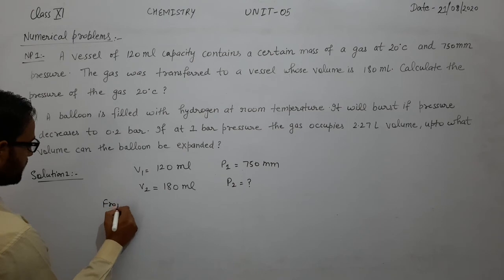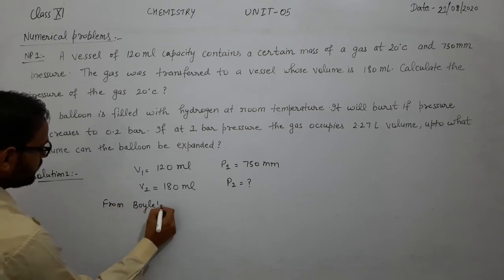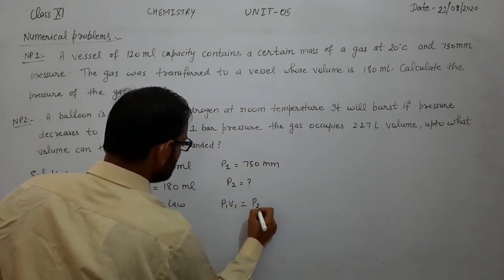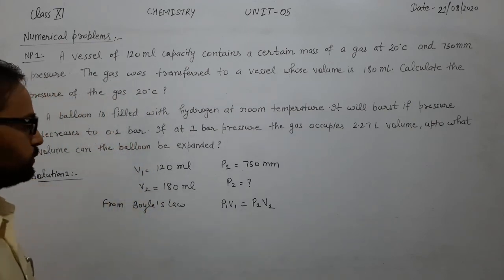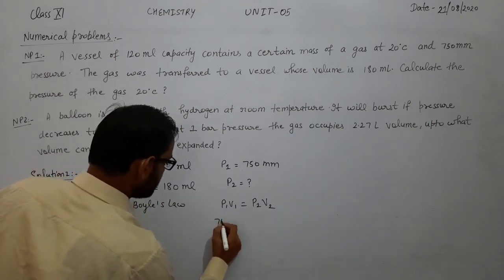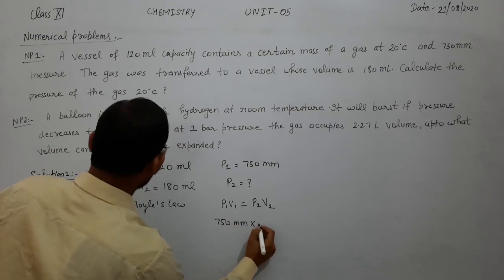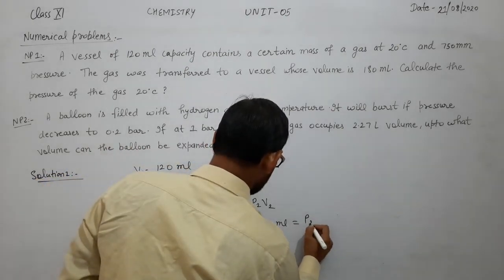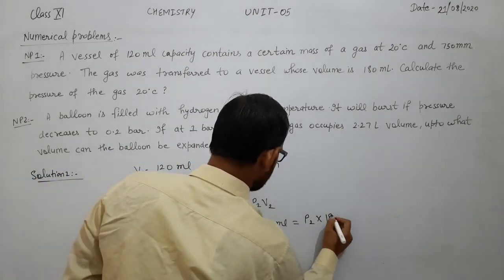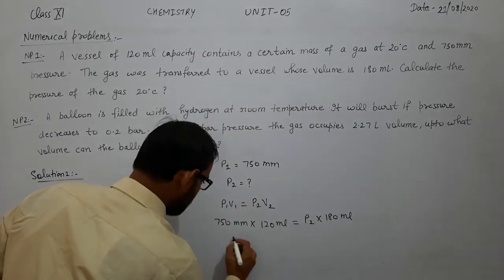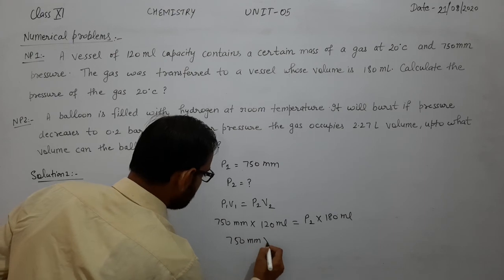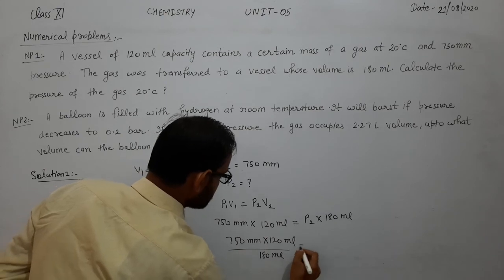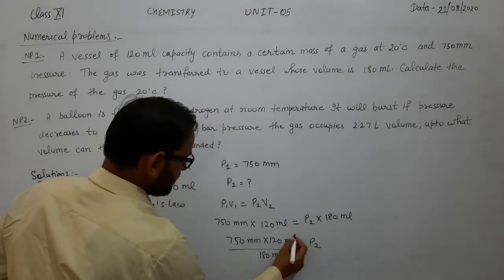As you know from Boyle's law, P1V1 is equal to P2V2. P1 is 750 mm, V1 is 120 ml, and we need to calculate P2 where V2 is 180 ml. So P2 is equal to 750 multiplied by 120 divided by 180.